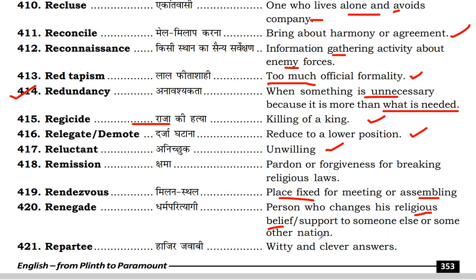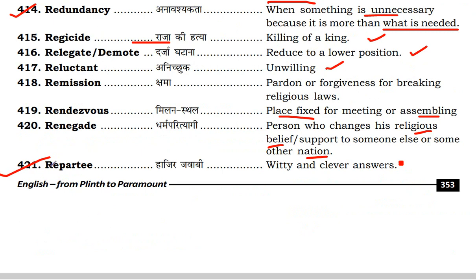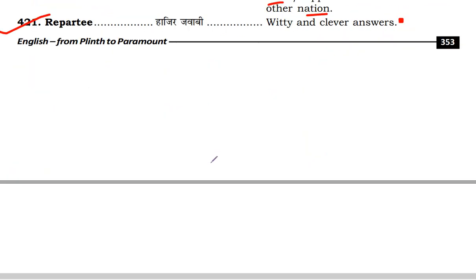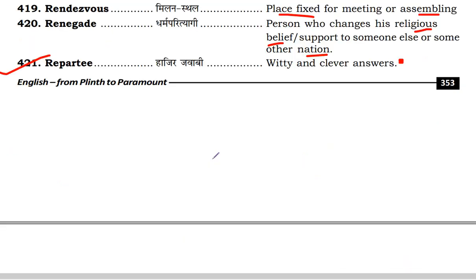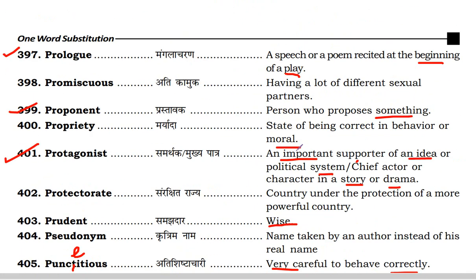Next is rendezvous — a fixed place for meeting and assembling. Next is renegade — a person who changes his religious beliefs or transfers support to someone else or another nation. Next is repartee — a witty and clever answer, a very quick reply. Today we will finish here. The next video will be the last class for one word substitution. If this video is good, then like and share. Thank you so much.